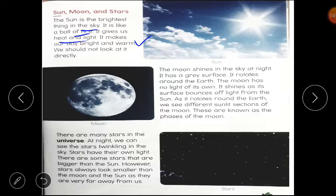We should not look at it directly because it can harm our eyes. The moon shines in the sky at night. It has a grey surface. It rotates around the earth. The moon has no light of its own. It shines as its surface bounces off light from the sun. These are known as the phases of the moon.